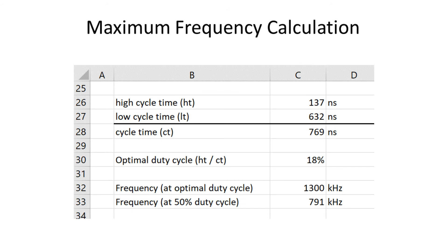With all this data we can calculate what our optimal clock would look like. Now that we know the complete cycle time which is 769 nanoseconds and we know that we need an optimal duty cycle of 18%, that means 18% of the complete cycle time is the high time of the clock. That makes a frequency at optimal duty cycle of 1.3 MHz.